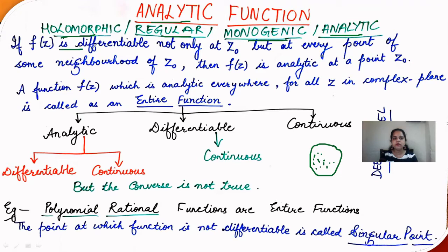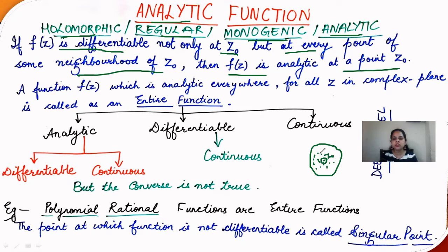The formal definition: if f(z) is differentiable not only at the point z₀ but at every point in the neighborhood of z₀, then f(z) is analytic at the point z₀. So we are not just checking differentiability at z₀ itself, but at each neighborhood point of z₀, and if it is differentiable at each such point, the function is called analytic.